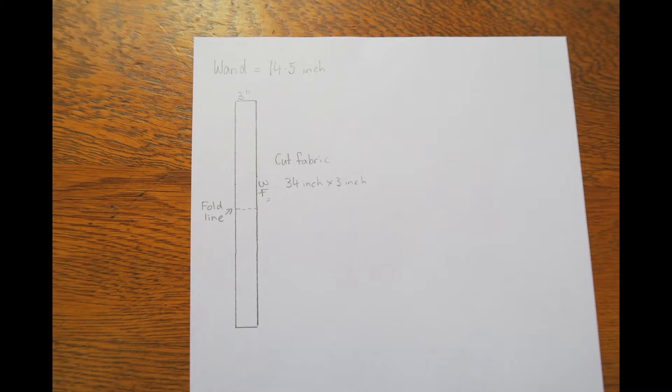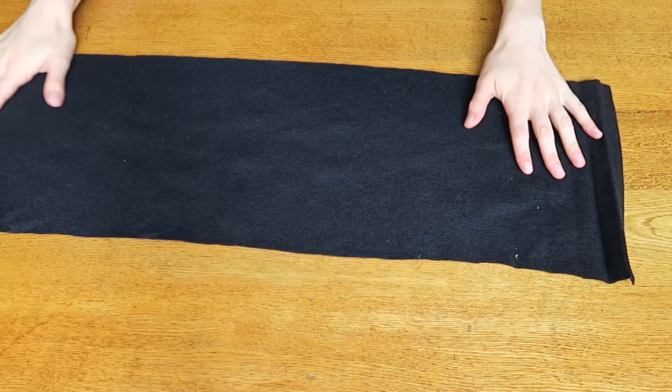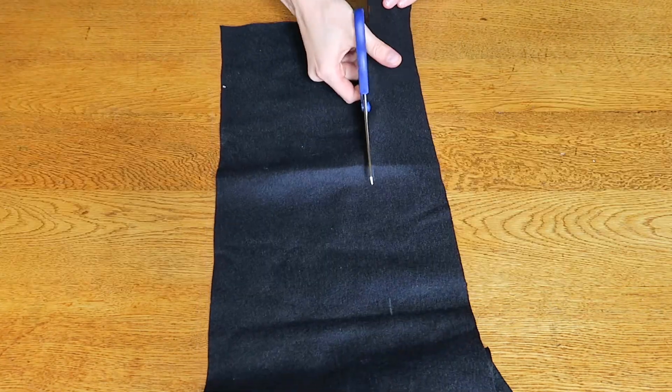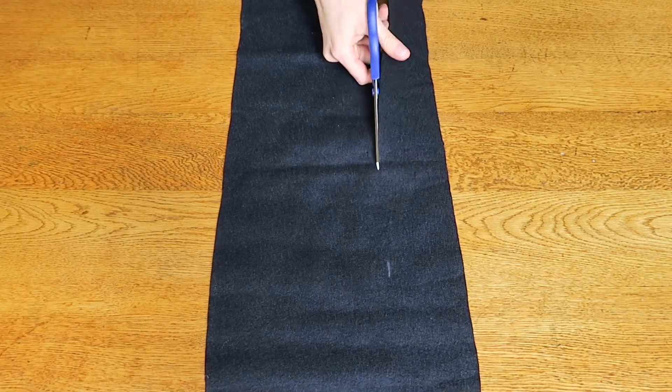You will need to measure your wand and make the pouch longer by 2 inches. My wand is 14 and a half inches so I'm making my pouch about 17 inches long. Double this length so you can fold the fabric over in the middle.